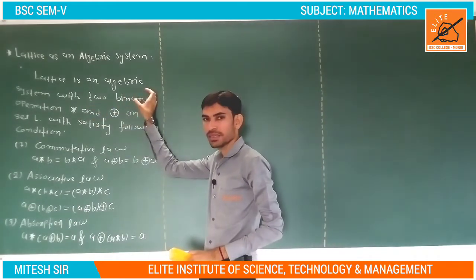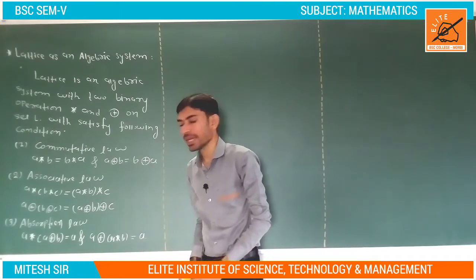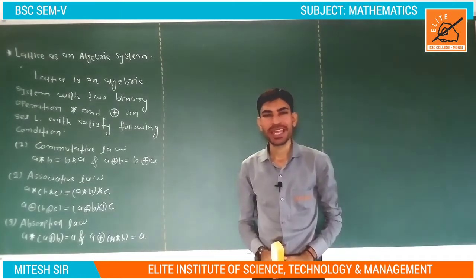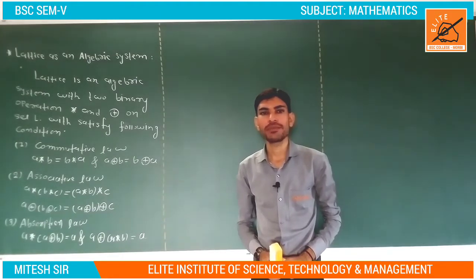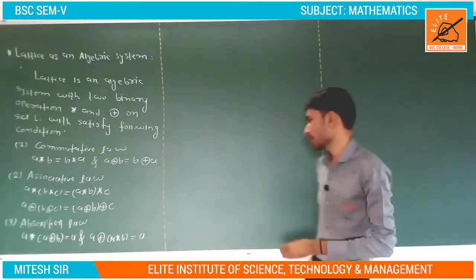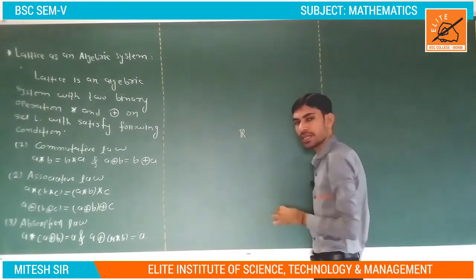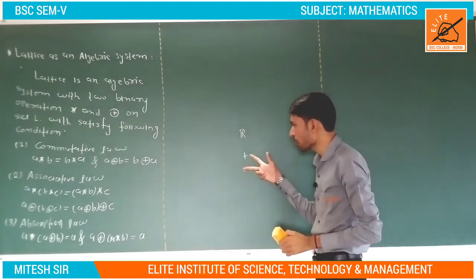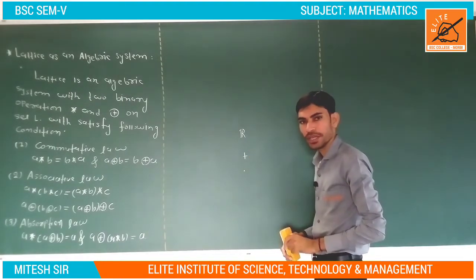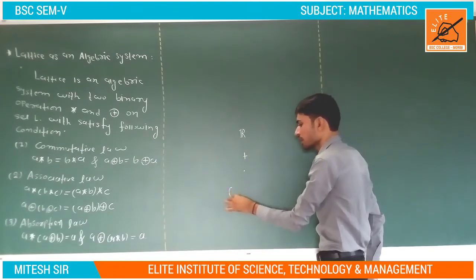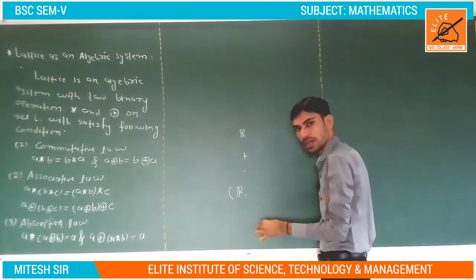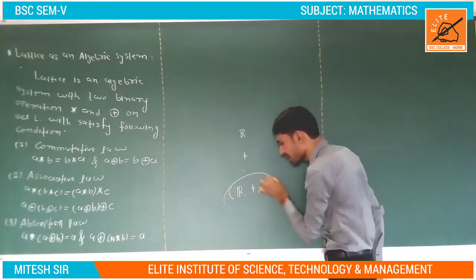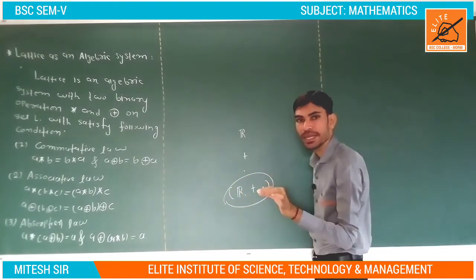A lattice is an algebraic system with two binary operations, star and ringsum. As we know about binary operations — we learned about them in semester 4 when we studied vector spaces. Let R be the set of real numbers. Addition and multiplication are both binary operations on the set of real numbers, so the structure — set of real numbers with two binary operations — is known as an algebraic system.